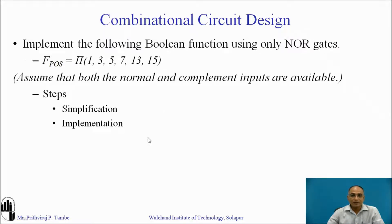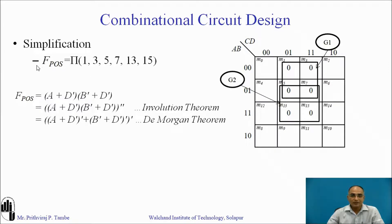For simplification we require a four-variable K-map. After placing all max terms inside the K-map, we have two groups. The first group gives expression A + D̄; the second group gives B̄ + D̄. Now applying involution, the expression looks like (A + D̄)··(B̄ + D̄) with two inversions applied.